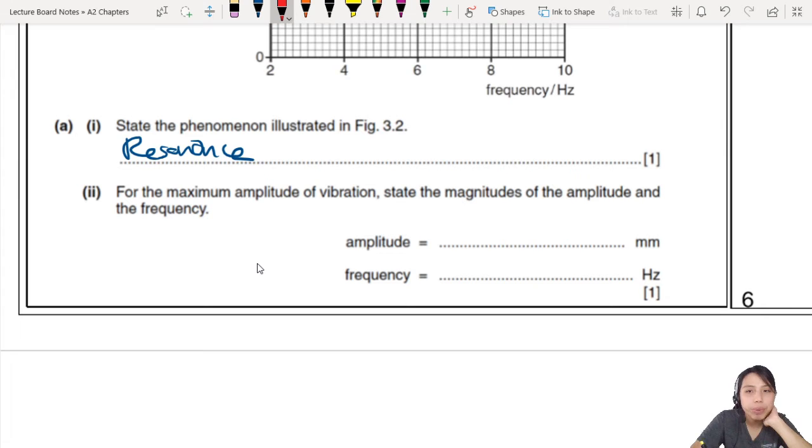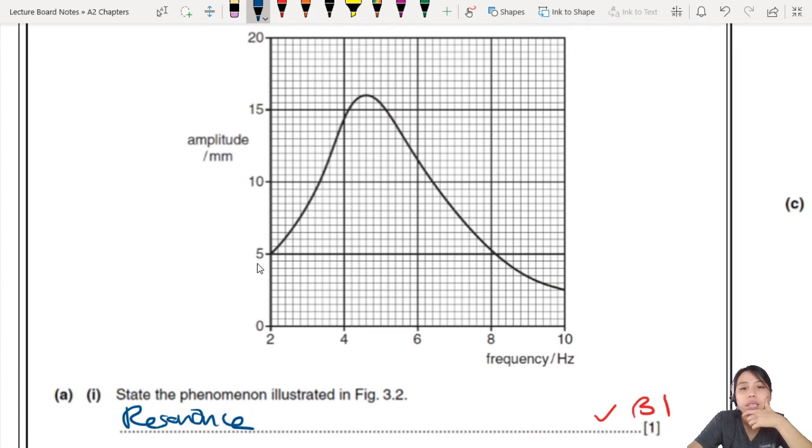Next one. For the maximum amplitude of vibration, state the magnitude of the amplitude and the frequency. So you're looking at maximum amplitude of vibration. So you look here. Where is maximum? Here. This peak here. And where does that occur? This would be 16, I think. And what is the frequency? Somewhere here.